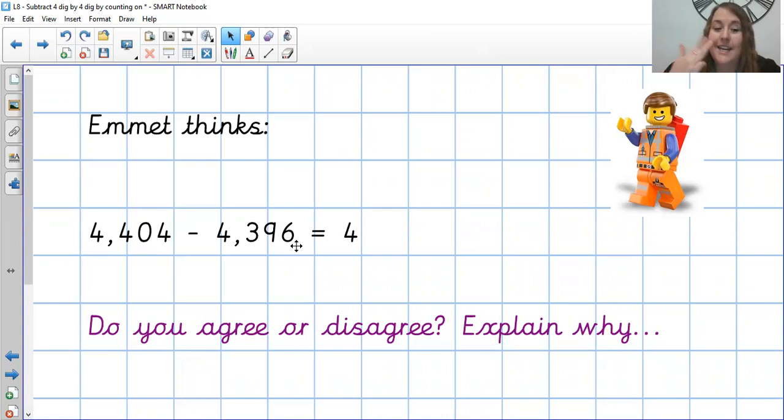So if we added on the 4 that he gave the answer to, we'd get to 4,400 exactly. So we still need another 4 to get to 4,404. So the actual answer is 8. Well done if you got that before I did.